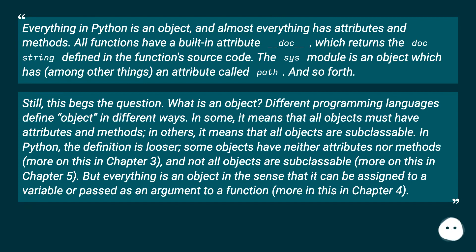Still, this begs the question: What is an object? Different programming languages define object in different ways. In some, it means that all objects must have attributes and methods; in others, it means that all objects are subclassable. In Python, the definition is looser.